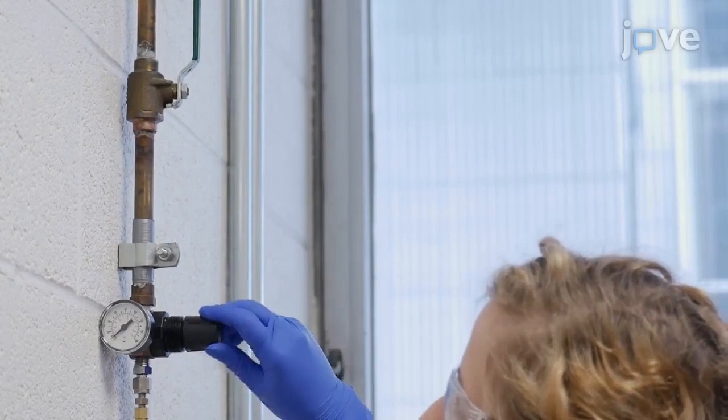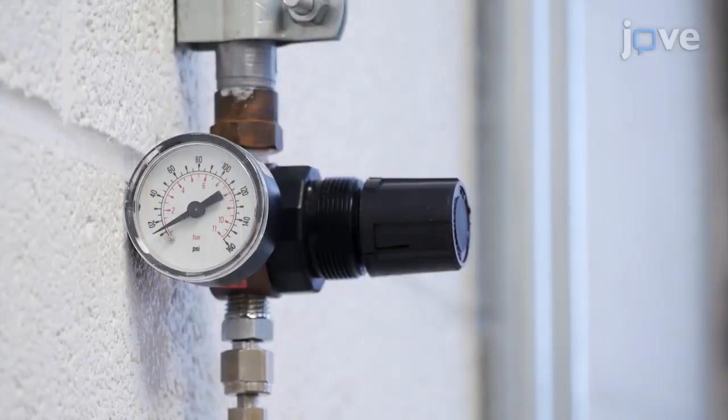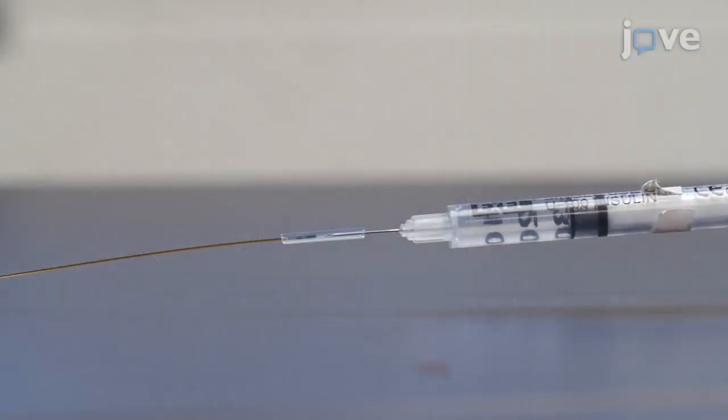To pre-treat the capillary, dry it with nitrogen gas at 10 psi for at least 12 hours. Then fill the capillary with 50% volume-by-volume 3-trimethoxycylilpropylmethacrylate in methanol using a syringe pump.